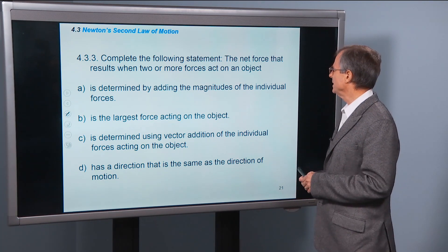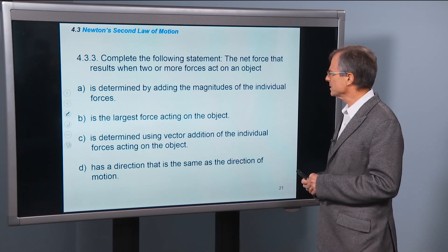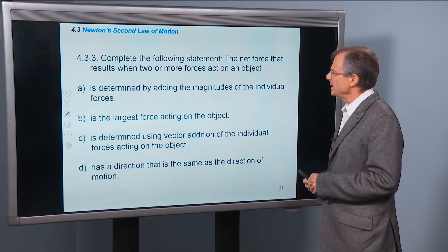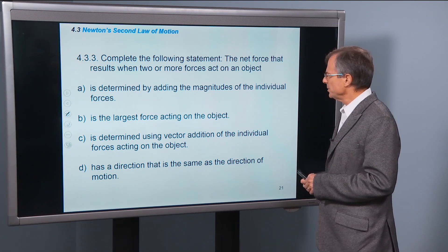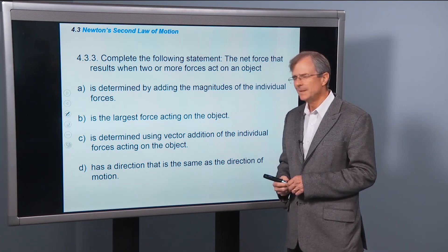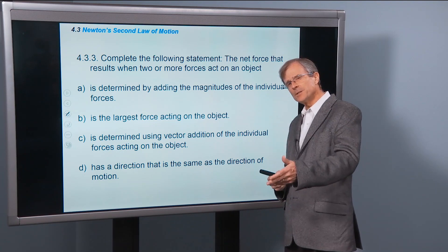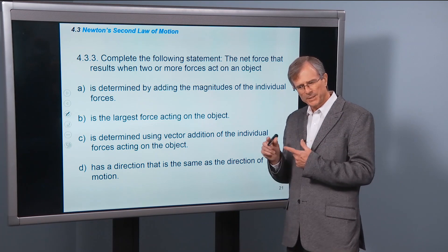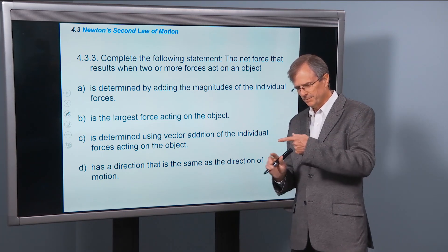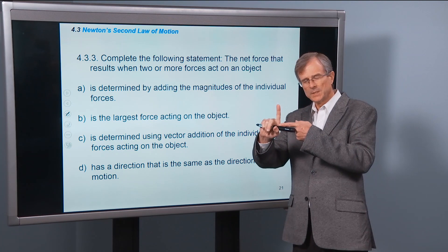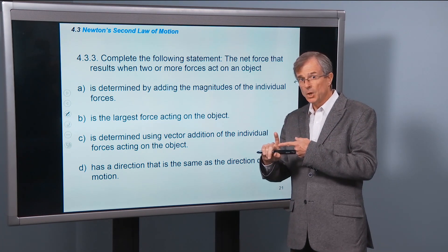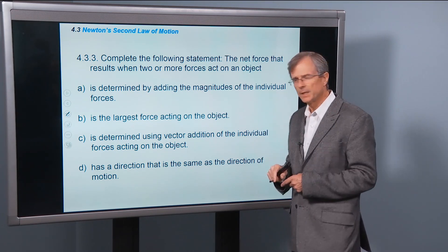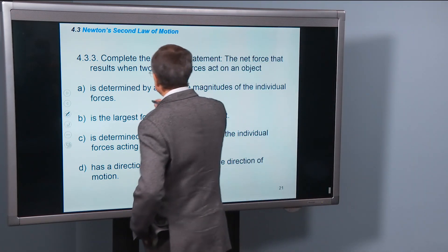Complete the following statement. The net force that results when two or more forces act on an object is determined by adding the magnitudes of the individual forces. So this actually harks back to the definition of the net force. How do you find the net force? Do you add up the magnitudes of those forces? If one's 3 newtons and then another one's 4 newtons, we add 3 plus 4 equals 7? No. We have to add those vectors. Remember in the second example that we did with the 3, 4, 5 triangle. So that's not true. That's false. Can't add the magnitudes to get the net force.